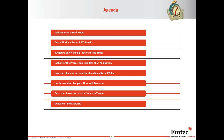Then we'll get into talking about the budgeting and planning process today: what people are using, what are some of the issues that they run into. We'll then move on to — now that we all know what the issues are — what are the steps involved, what do you need to do to start evaluating a potential purchase of an application, what qualities of an application should you take into consideration as you're out in the marketplace.